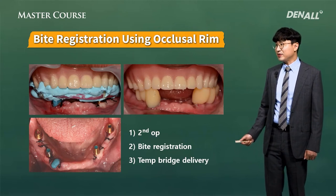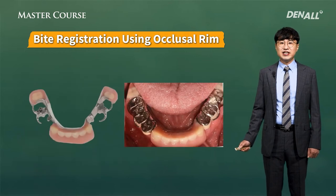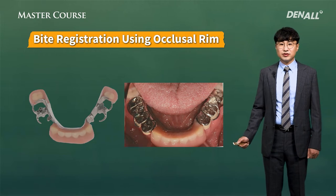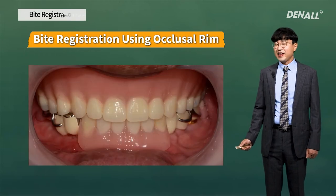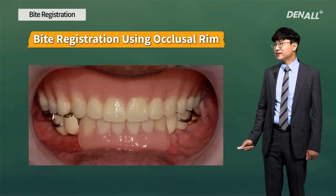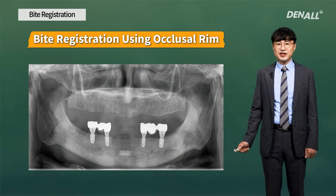For this type of case, use an occlusal rim to take the bite relationship. Based on the jaw relationship registered using the occlusal rim, the prosthesis has been completed. And this is the final panoramic picture.